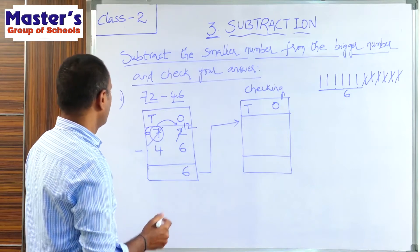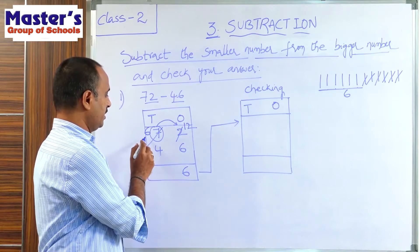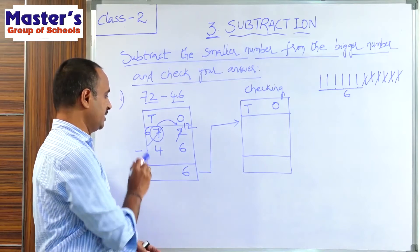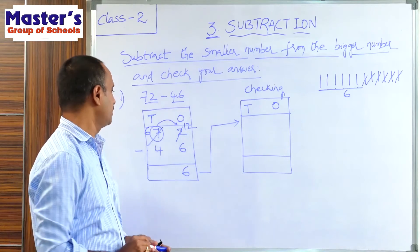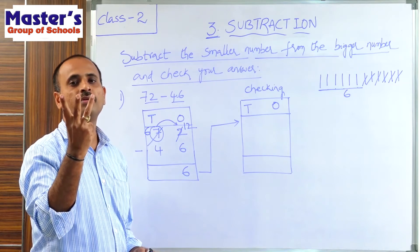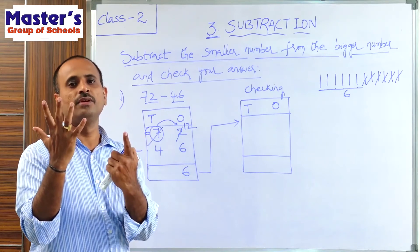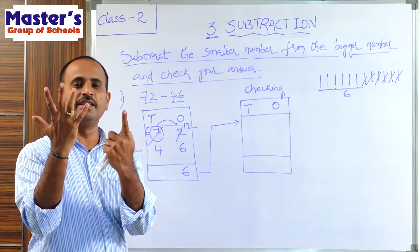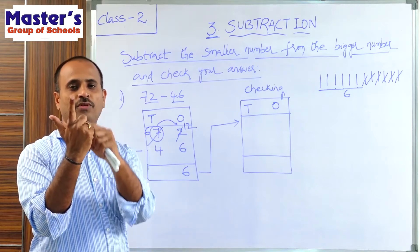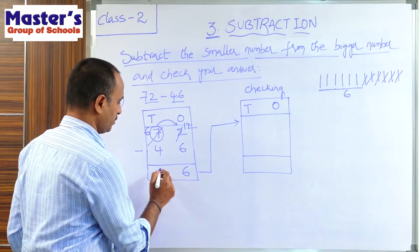Now go to the 10's place. 6 and 4 are present in the 10's place. Open 6 fingers; close 4 fingers — 2 fingers are left. The answer is 2. So the difference is 26.